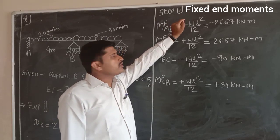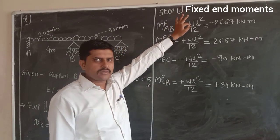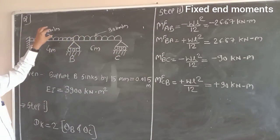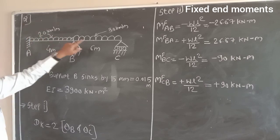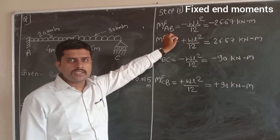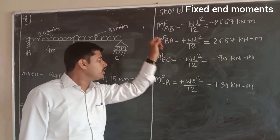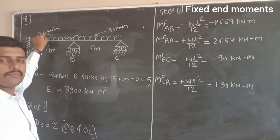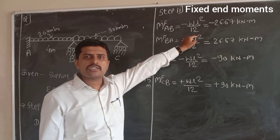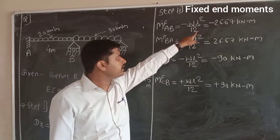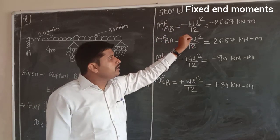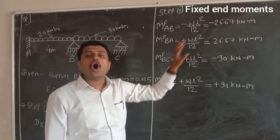We move to step 2, that is, fixed end moments. For span AB, UDL is present over the whole span. The formula for UDL will be minus WL²/12. With W = 20 and L = 4 m, we get minus 26.67 kNm. Similarly, for BA, the value remains the same with opposite sign: plus 26.67 kNm.